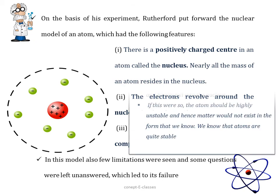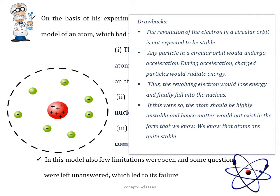What were the drawbacks of the Rutherford model? Mainly, it was the case of stability of an atom. The revolution of an electron in a circular orbit is not expected to be stable because any particle in a circular orbit would undergo acceleration. During the acceleration, the charged particles would radiate energy. Thus the revolving electron would lose the energy and finally fall into the nucleus. If this were to happen, the atom would be highly unstable, hence matter would not exist. We know that atoms are quite stable. Hence the stability of an atom could not be explained by Rutherford's model.